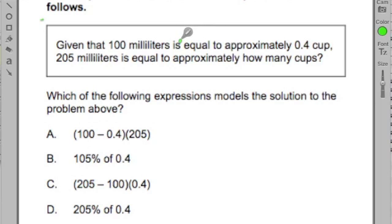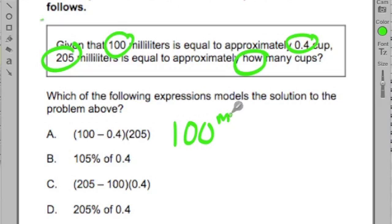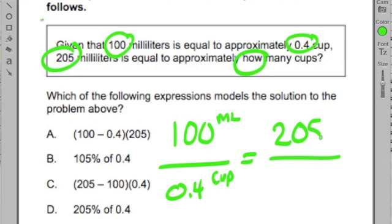Now, when you see something like something is equal to something, and then you have the same structure, something else is equal to something else, what we have here is two parallel ratios. For every 100 milliliters, we're using up 0.4 cups. Now, that is equal, because remember it says, it's giving us a ratio. Now we're going to use that same ratio, but increase the values to 205 milliliters is equal to how many cups? And we're looking for a way to get to that answer. The first part is to be able to set up those two ratios, and balance them, and set it up.